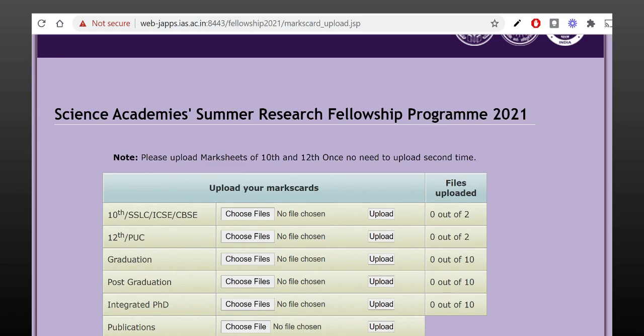This is the window where you can upload your mark list. Here, starting from 10th, you have to upload 12th, graduation, post-graduation, integrated PhD, publication and all those things. If you are doing your graduation, you have to upload 10th and 12th mark list. If you are a post-graduate student, you have to upload 10th, 12th and graduation. And similarly, all other things.